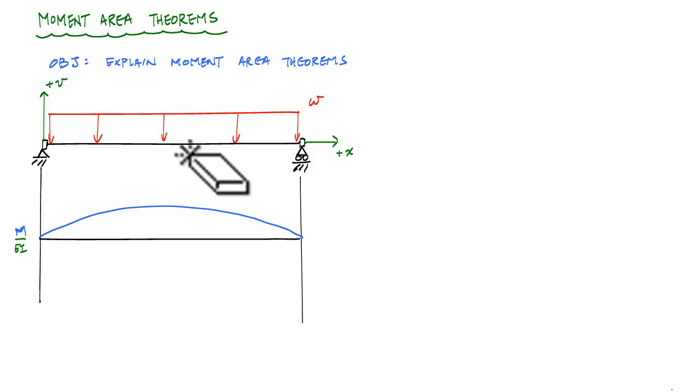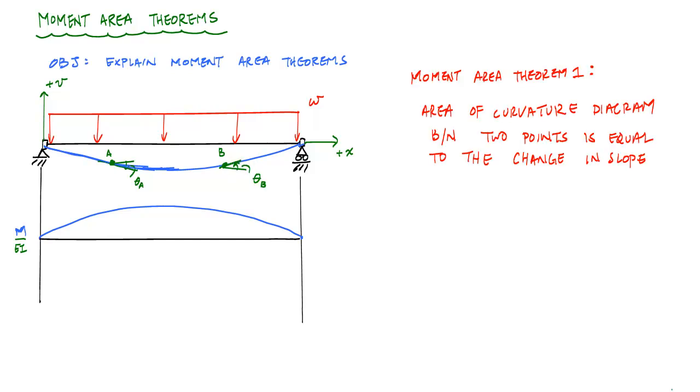Now, I want to take a closer look at my deflected shape when I talk about the first moment area theorem. So the deflected shape will look something like this. And if I look at two points along the length of the beam, let's say I take this point as point A and this point as point B. From the deflected shape here, here's the tangent line. And here is the slope rotating clockwise, theta A. And here, rotated counterclockwise from the horizontal is theta B. So the first moment area theorem says that the area under the curvature diagram between two points is equal to the change in slope. So what it means is this area is equal to the change in slope or the difference between theta A and theta B.